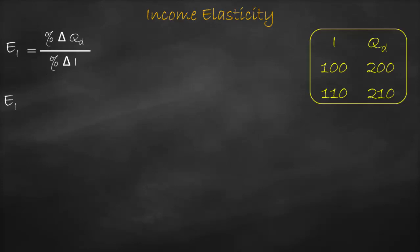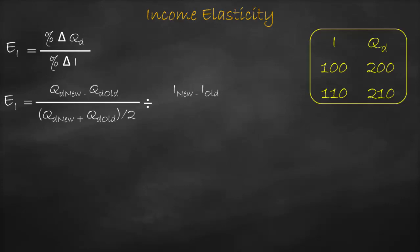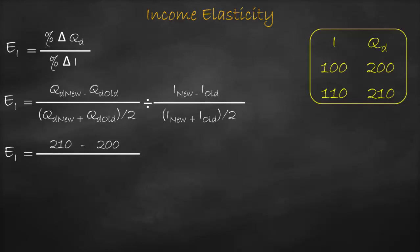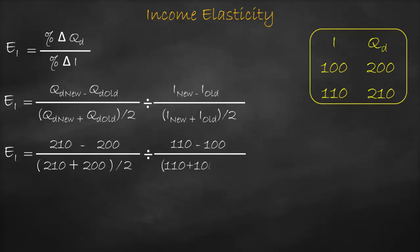Our income elasticity formula is percent change in quantity demanded divided by percent change in income. We will use the midpoint formula: new quantity demanded minus old quantity demanded, divided by the average of quantity amounts, divided by new income minus old income, divided by the average of income. Substituting: 210 minus 200, divided by (210 plus 200) divided by 2, divided by 110 minus 100, divided by (110 plus 100) divided by 2.